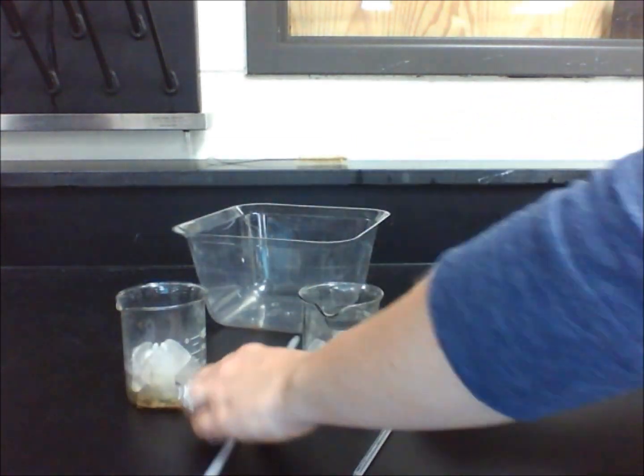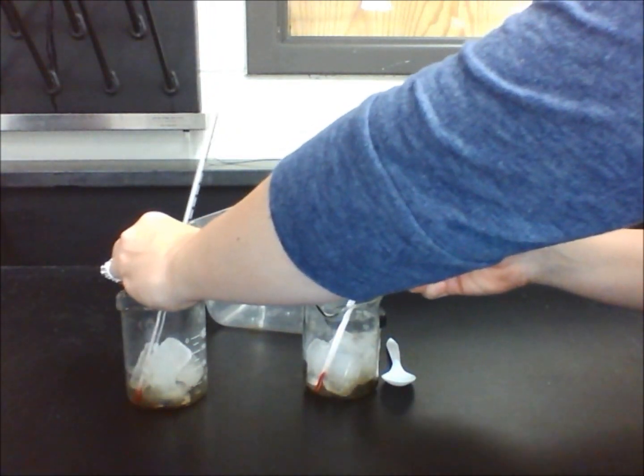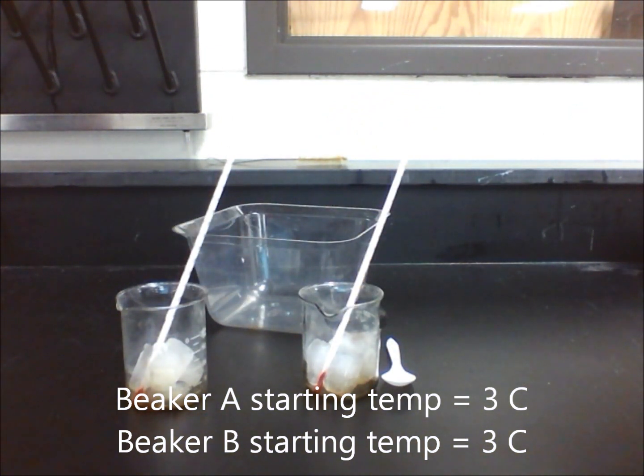Place a thermometer in each beaker and wait one minute. Measure the temperature of the crushed ice from each beaker and record your results in table 1 for starting temperature.